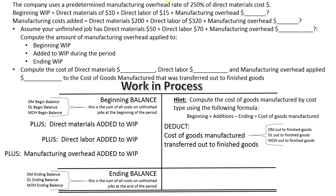I would recommend you print this out and put in all the known information. For beginning work in process, put the $10 for direct materials beginning balance and $15 for direct labor. Then compute the overhead applied based on the direct materials and the predetermined rate. Fill in all known pieces of information into the beginning balance, added during the period, or the ending balance. Then solve for the missing pieces using the concept: take your beginning direct materials, add the direct materials added during the period, take away what you still have, and the difference must be the direct materials transferred out to finished goods. Stop the video now and work on this problem — it should only take about five minutes.